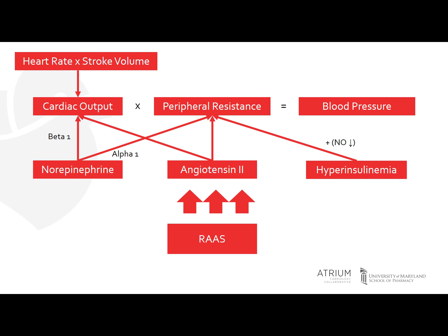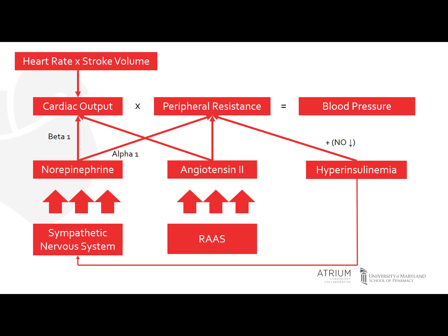Another mechanism that has been discussed is hyperinsulinemia, which means there are high insulin levels in your bloodstream. This causes an activation of the sympathetic nervous system, which then stimulates the release of catecholamines such as norepinephrine, causing an increase in metabolic demand.